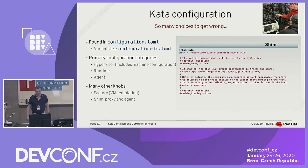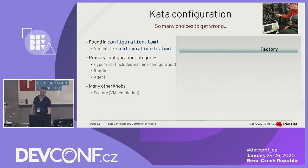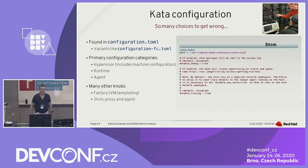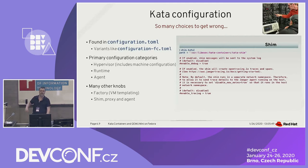There are many other nodes. Factory is one that is interesting — it allows you to do VM templating, for instance. You have configurations for all the subcomponents — the shim, etc. All these are in different sections of the same configuration.toml file.